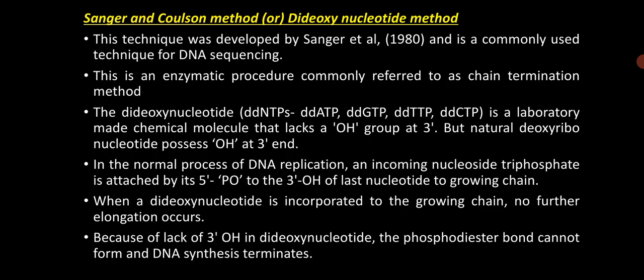The next method is the Sanger and Coulson method. It is also called the dideoxy nucleotide method or chain termination method. This technique was developed by Sanger et al. in the year 1980 and is a commonly used technique for DNA sequencing compared with the Maxam and Gilbert method. This is an enzymatic procedure commonly referred to as the chain termination method.